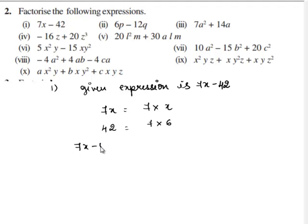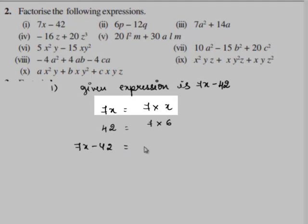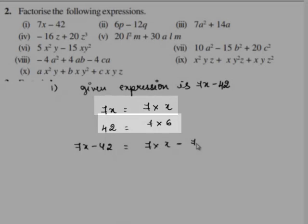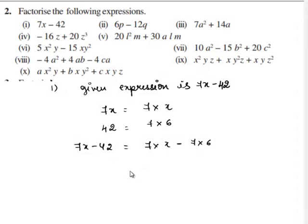So 7x minus 42 can be written as 7 times x minus 7 times 6. Using the distributive law,